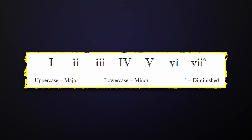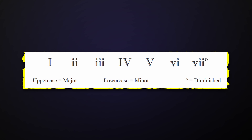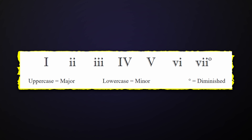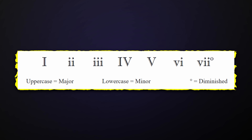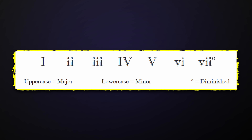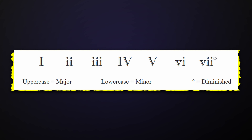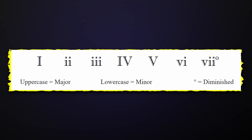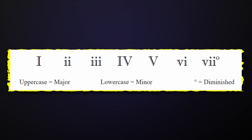Here are the seven chords you find in major keys. Uppercase roman numerals represent major chords, lowercase are for minor chords, and the diminished chord is lowercase with a small circle or degree symbol next to it.